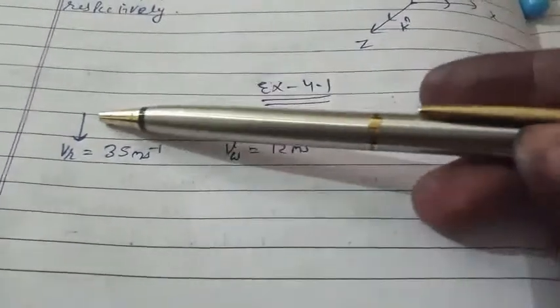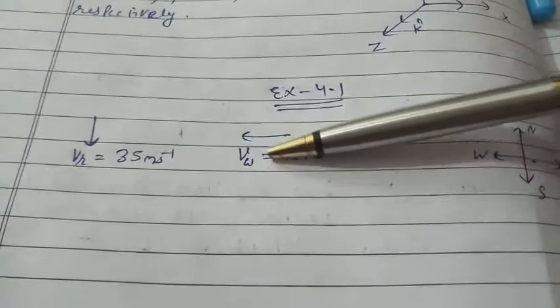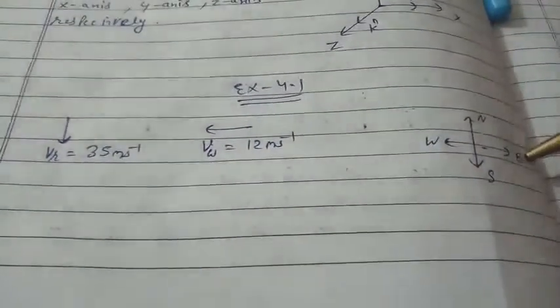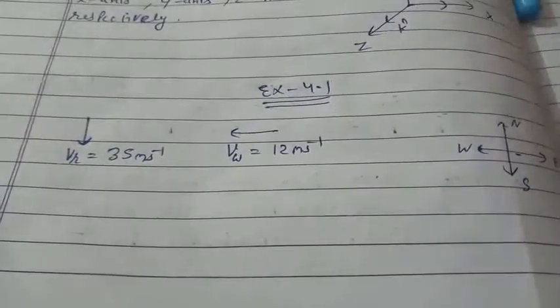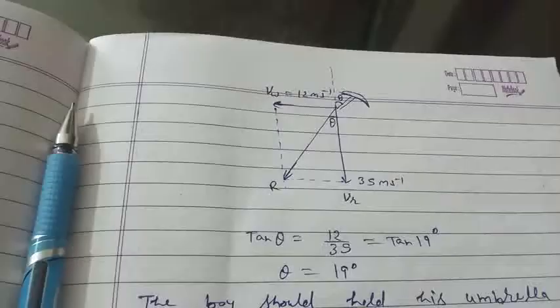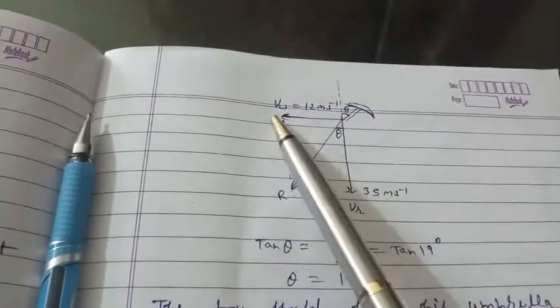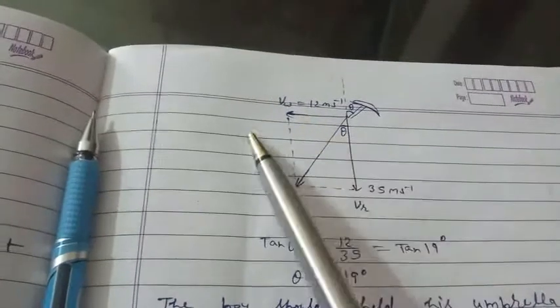Rain is falling vertically with a speed of 35 meter per second, and the speed of wind is 12 meter per second from east to west. Wind speed is 12, rain speed is 35. We will apply the parallelogram law.